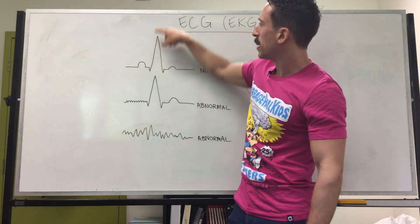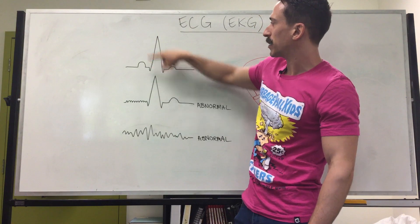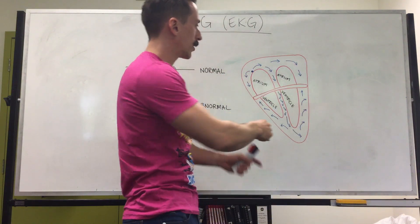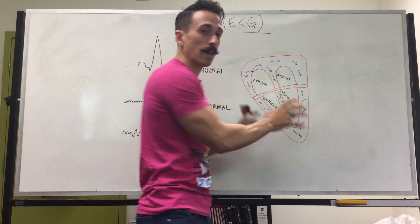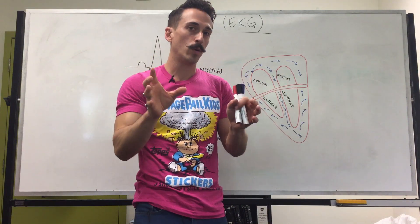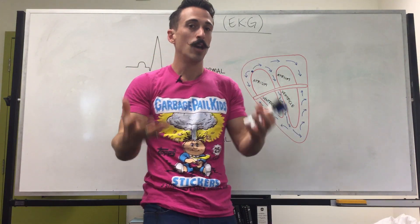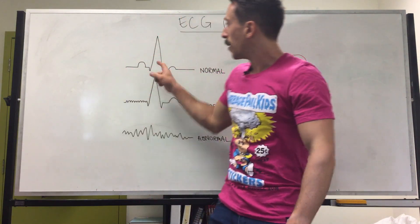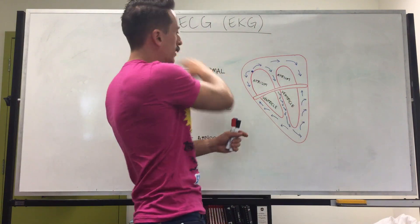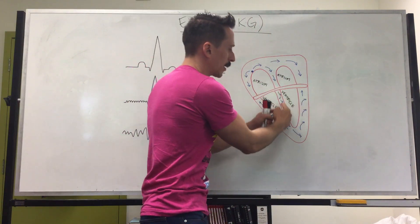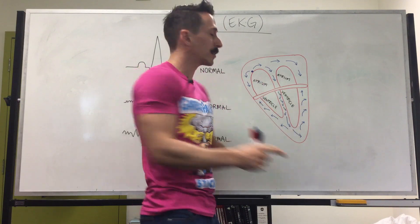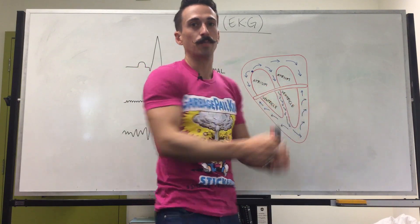This is then followed by contraction. Then you can see a very big steep spike. This is representing the electrical activity of the ventricles. The ventricles have bigger muscular walls, which means more electrical activity, which means a bigger spike. So this big spike represents the electrical activity in the ventricles, followed by contraction of those muscles.